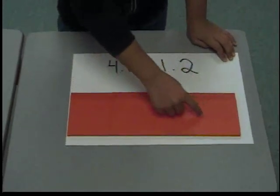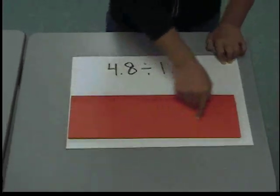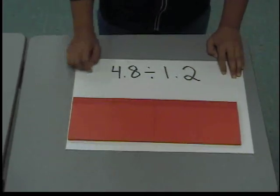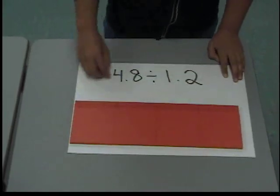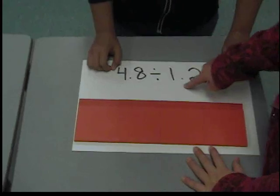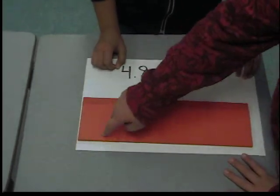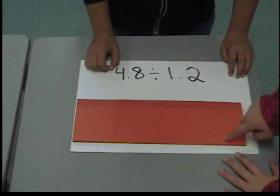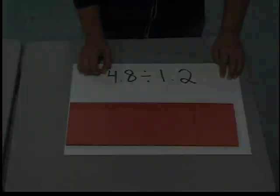So now we have our answer, which is 4. Four whole. Because one side length is 1.2, so the other is 1, 2, 3, 4, which gives us our answer of 4.